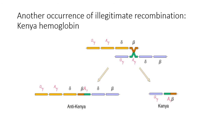Another famous example of illegitimate recombination caused the formation of the Kenya hemoglobin — it's the same idea, just a different misalignment. In this case, you have a beta aligning with an A gamma, which is of course very similar, and an exchange which results in one chromosome that has a G gamma and A gamma-beta fusion. The anti-Kenya is the one that gains information, having G gamma, A gamma, delta, beta, A gamma, delta, and beta. That is an abnormal chromosome but doesn't have any deleterious effects.